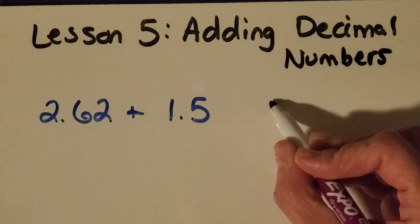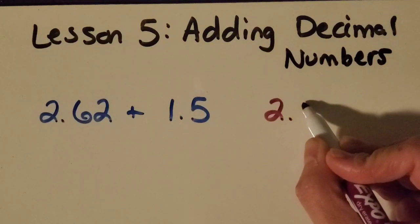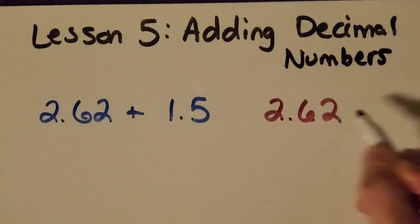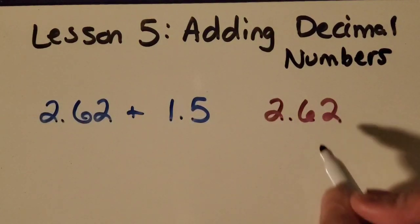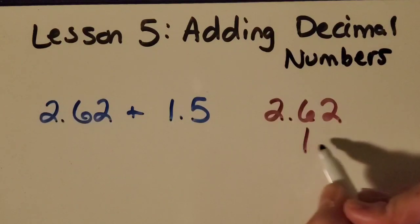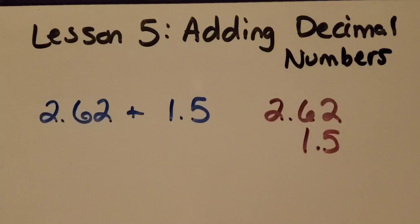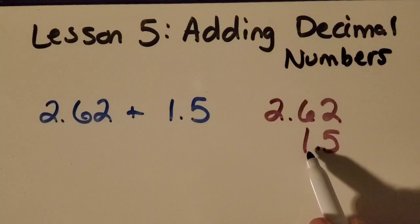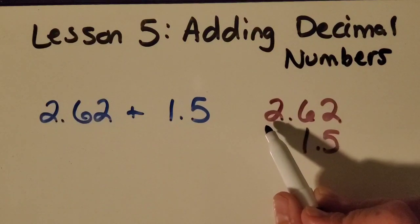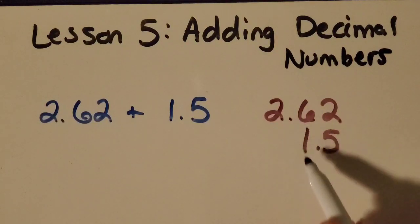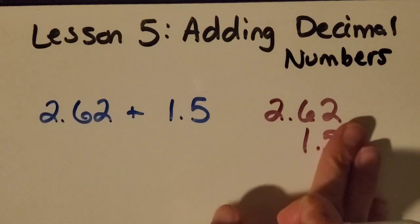You want to start by getting everything lined up. So let me ask you this. If I do this, is this all lined up? Is the one's place lined up with the other one's place? Okay, good. I'm glad you noticed that no, they're not lined up. The decimal point is not lined up. So let's fix that.